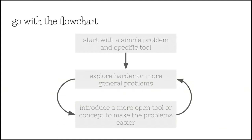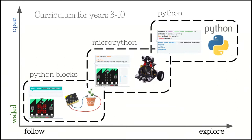And now if you don't quite know how to take that into reality, here's what we do for teaching kids from years three to ten. We start off with Python blocks and you've got something like a micro:bit — you're showing a little butterfly on the micro:bit.